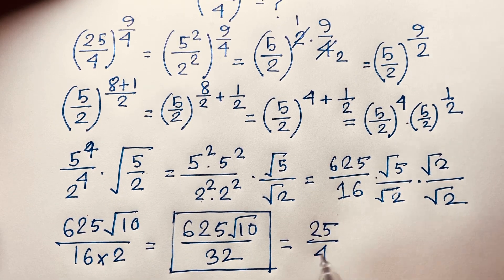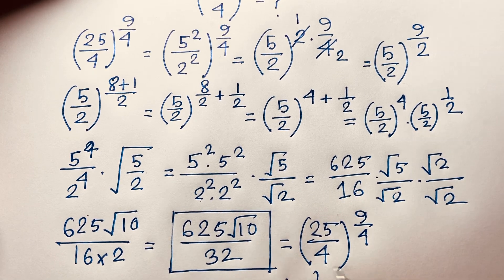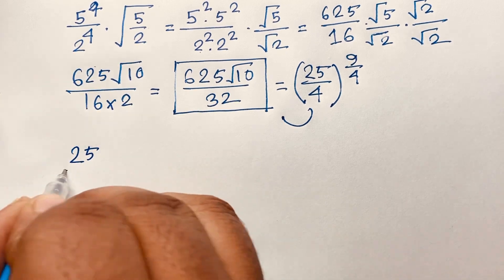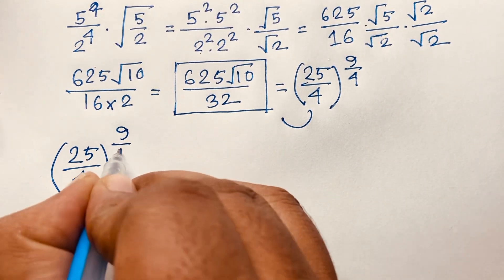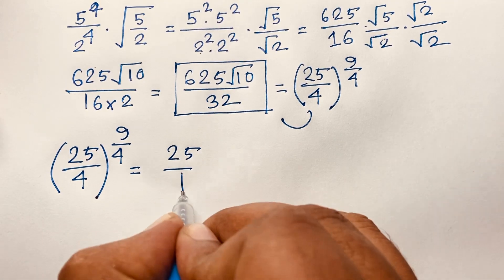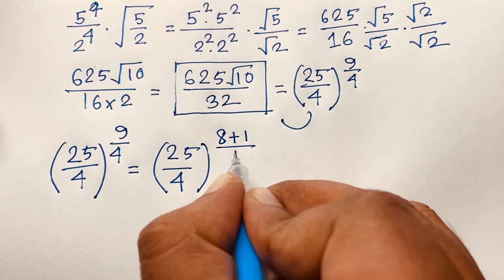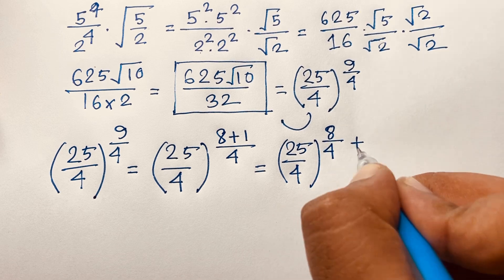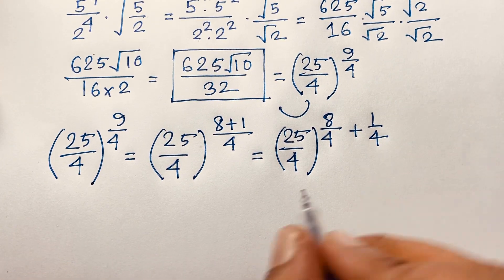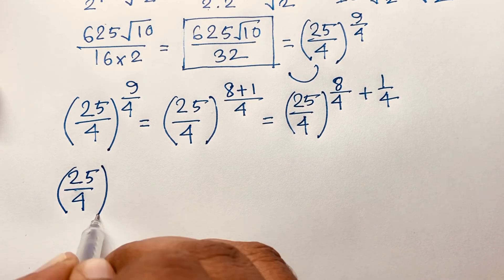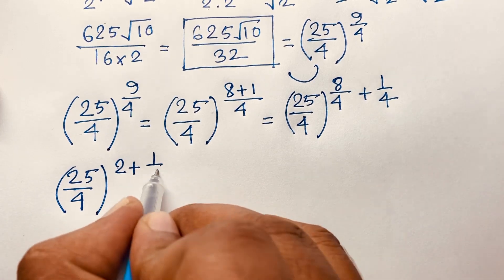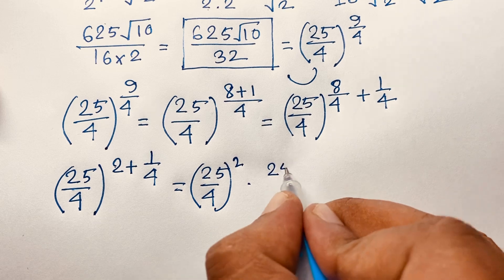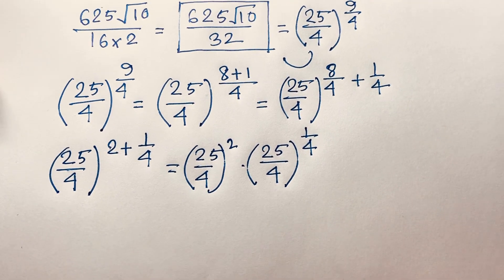Now I solve this question using the second method. Our question is (25/4) to the power 9/4. I rewrite the exponent: 9/4 = (8+1)/4. So the expression becomes (25/4)^(8/4 + 1/4), which separates into (25/4)^2 times (25/4)^(1/4).